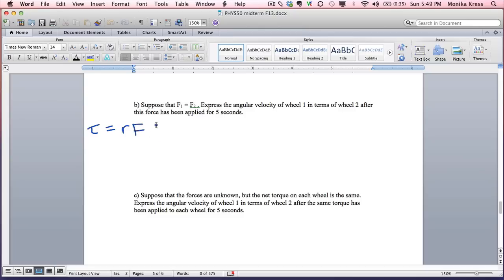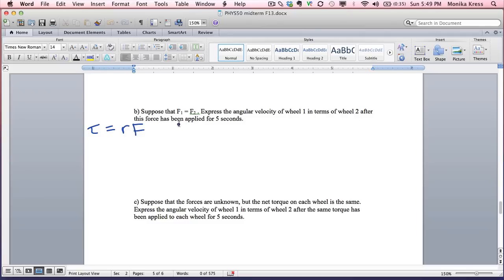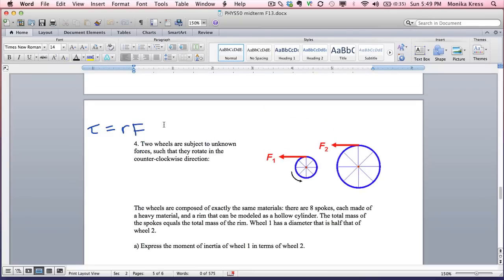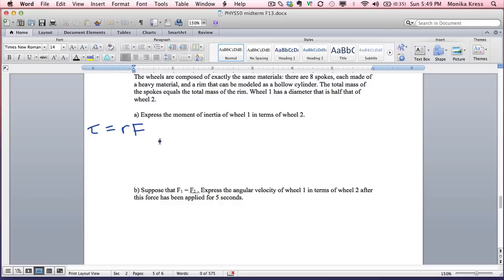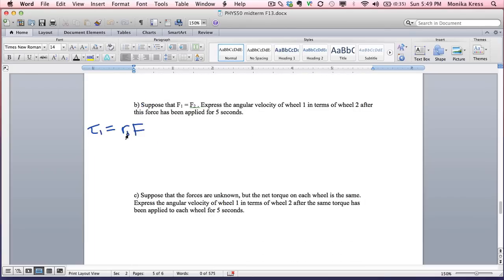If we want to compare what happens in these two cases, we can compare the two equations, one for the first wheel and one for the second wheel. Torque 1 equals radius 1 times F1. If we want to compare these two wheels to each other, it specifies that F1 is equal to F2, so this equals that. That means torque 1 compared to torque 2 is going to be 1 half because r1 is half of r2.